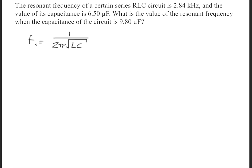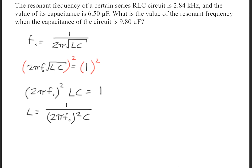What we need to solve now is the inductance. The question gives us the capacitance and the resonant frequency, but in order to calculate the new resonant frequency, we first need to know what the inductance is. So we'll go ahead and cross-multiply both sides, and then square both sides. This gives us 2 pi times the resonant frequency squared times the inductance times the capacitance equals 1.